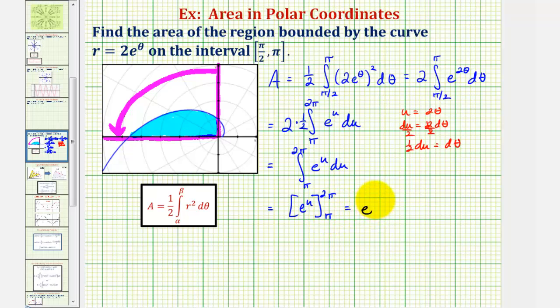We have e to the two pi minus e to the pi, which would be the exact area of this shaded region. Notice how we could factor out e to the pi if we wanted to. This is equivalent to e to the pi times the quantity e to the pi minus one.